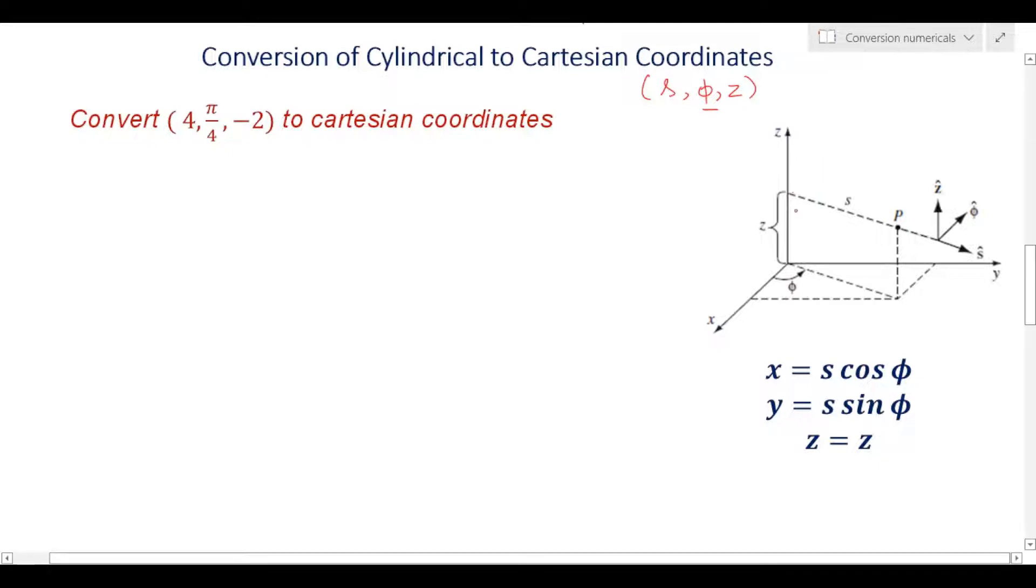In some books this is given as rho, phi, z or r, phi, z. It's just a matter of choice, but whatever variable you use, the meaning remains the same. If in the question the points are given, those points can be in Cartesian coordinates.